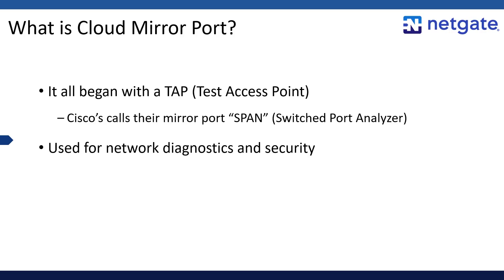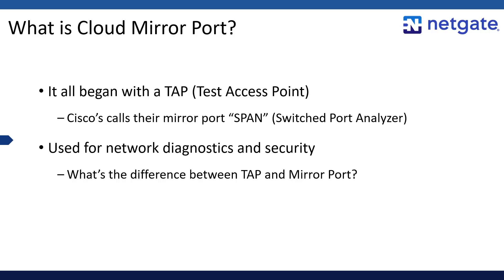Both TAP and mirror port can be used for network diagnostics, but there's a difference. A TAP is a splitter that sends a signal coming in on one port out of two more. A mirror port, on the other hand, is a feature of the switch that sends any data that transits a port in either direction out of another port. But switches handle traffic at layer 2. In the cloud, layer 2 is effectively hidden. So how do you solve the same diagnostic and security problems in the cloud that mirror port enables you to solve in the data center? Be sure to check the links below for more information about L2 in the cloud if you're curious.